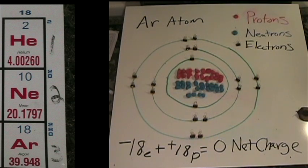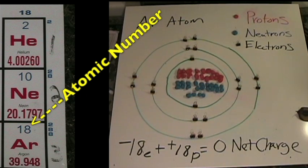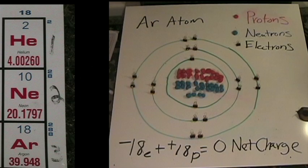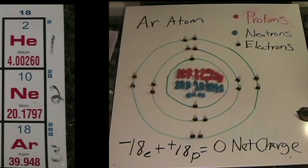Remember, electrons have a negative charge and protons have a positive charge. We have 18 protons represented by the red Play-Doh balls in the nucleus, and 22 neutrons represented by the blue Play-Doh balls. That's because the atomic mass is 40 when rounded, minus the atomic number of 18, which gives us 22 neutrons. Two electrons on the inner shell, eight on the second shell, and eight electrons on the outer shell.